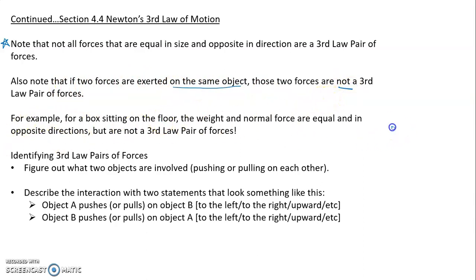So for example, if you have a box sitting on the floor, you have a normal force and you have weight. Those two forces—this is a free body diagram for the box, I should be clear on that—those two forces are both acting on the box. And so they are definitely not a third law pair of forces. Those two forces are opposite, they're equal in size, but they're not a third law pair of forces.